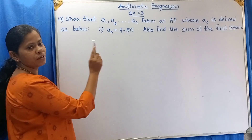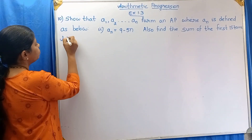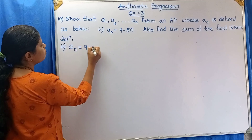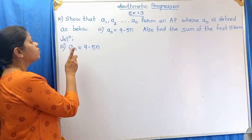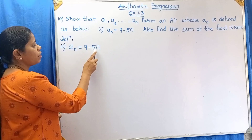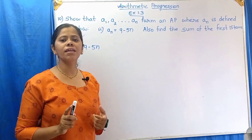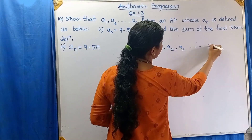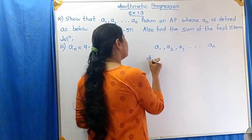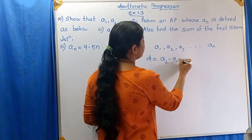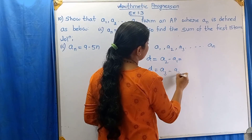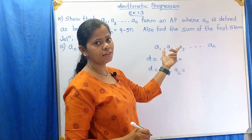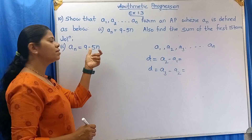First, let us solve the first part of the question. In the first part, we have to show that An = 9 − 5n forms an AP. In the second part, we have to find the sum of first 15 terms. We can say it is an AP when A2 − A1 = A3 − A2, that is, the common difference D is the same. So let us show that the given An is an AP.